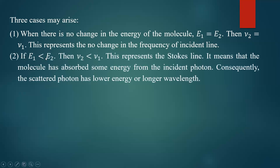Second case: if e1 is less than e2, the molecule has gained energy after collision. Then nu2 will be less than nu1, meaning the photon loses energy. This gives rise to Stokes lines — lower frequency compared to the incident frequency. The molecule has absorbed some energy from the incident photon, so the scattered photon has lower energy or longer wavelength.